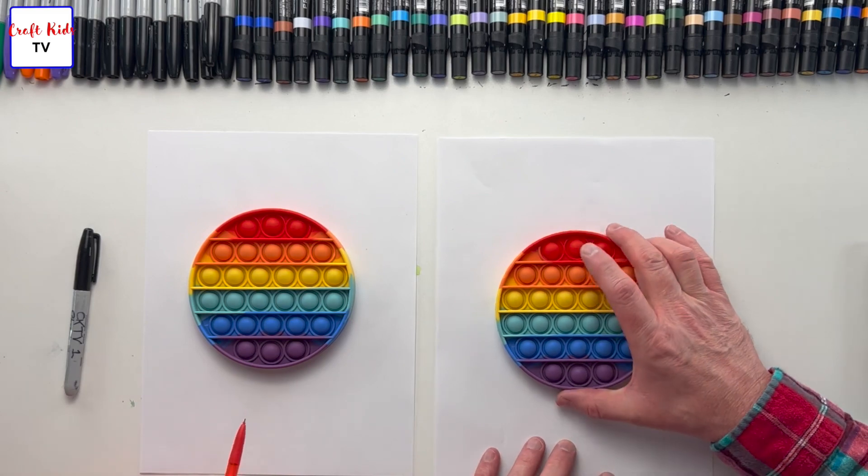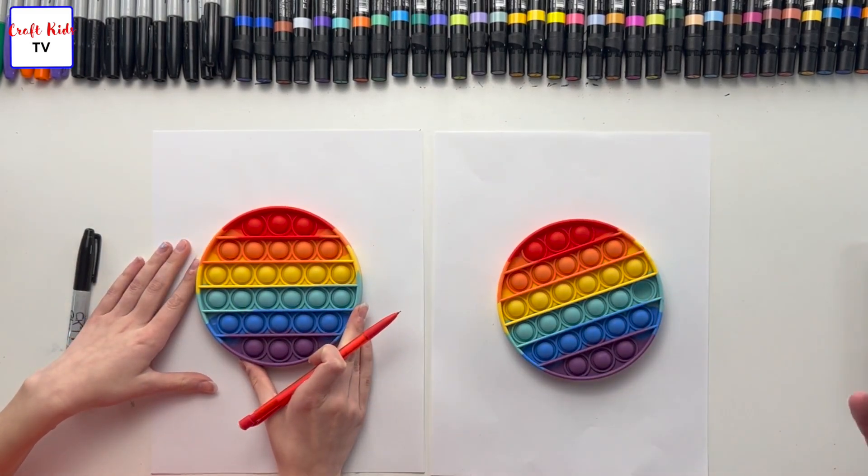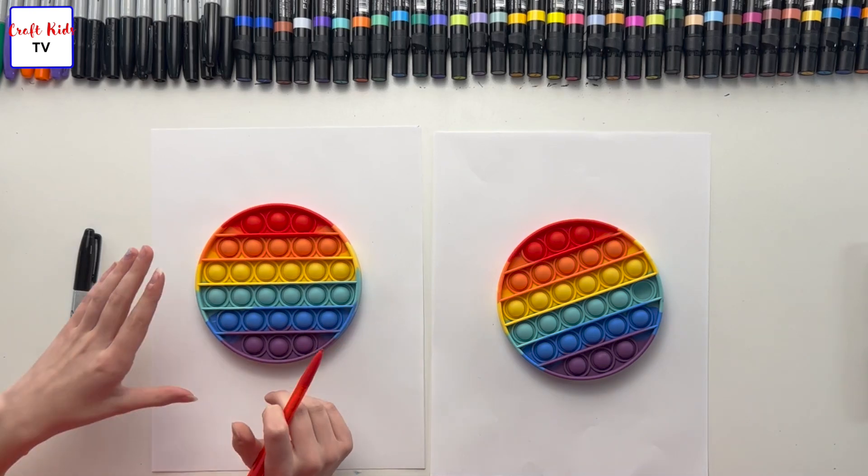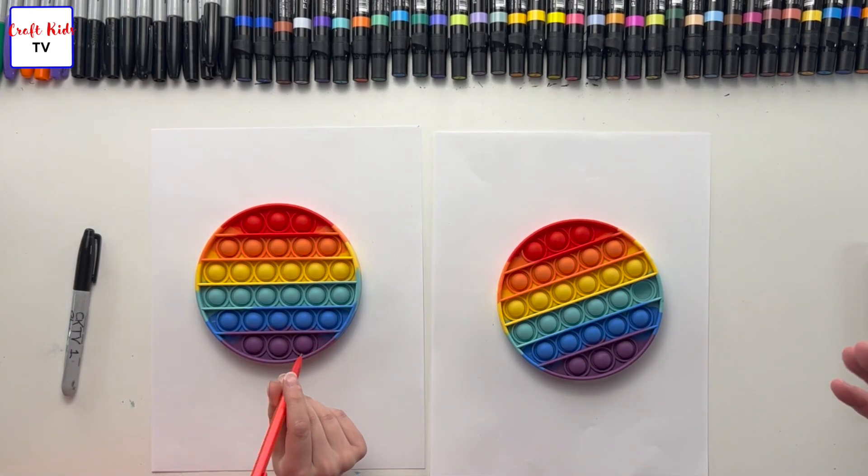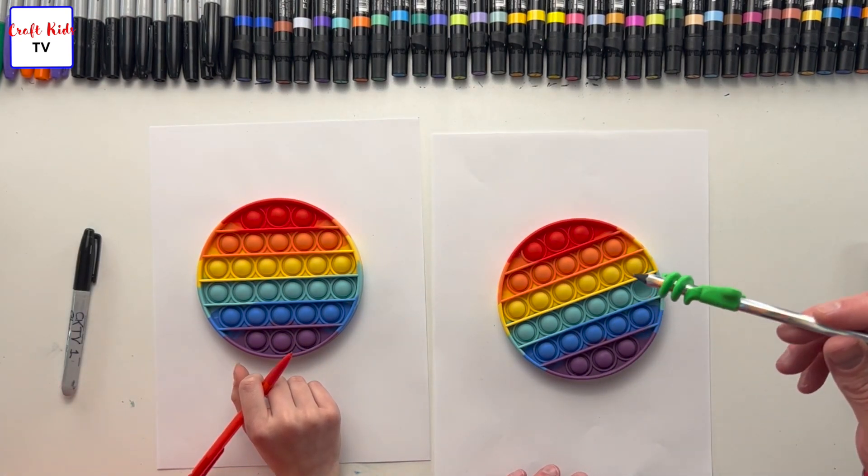All right kiddo, you ready? The first thing we're going to do to make these wreaths is take these circular pop-its and you guys at home can use anything that's circular, or if you just want to go for it without making a guideline. This isn't going to be the outline of our wreath, it's just going to be a guideline, so we're going to go super light.